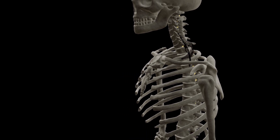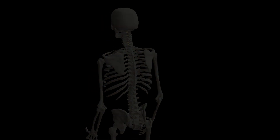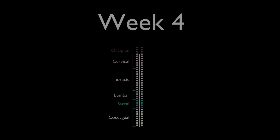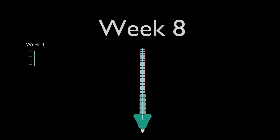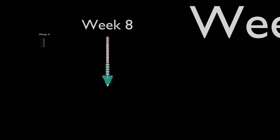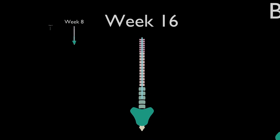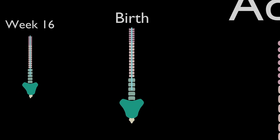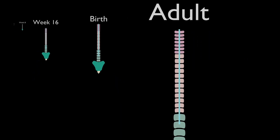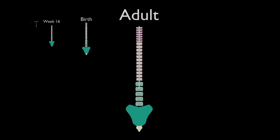Beyond these structural quirks, the vertebral column's partnership with the spinal cord is just as important. Early in the embryo, the cord and column are the same length, but as growth continues, the vertebral column outpaces the spinal cord. By the time of birth, the spinal cord usually ends at around the level of L3. And in the adult, it finishes even higher, at around L1 or L2. Everything below that point isn't cord anymore — it's a trailing bundle of nerve roots called the cauda equina.